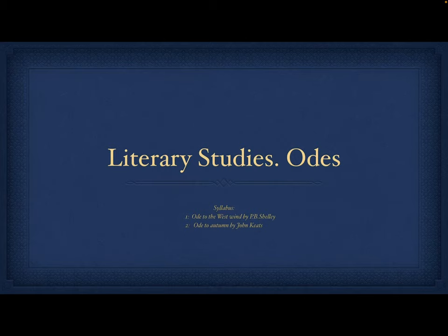As-salamu alaykum students. This is our lecture for the second semester B.S. English. Our paper is Literary Movements and we are going to go through the idea of odes in English literature today. We have been through the Ode to the West Wind by P.B. Shelley. We are now going to cover the second ode in our syllabus — Ode to Autumn, written by John Keats.